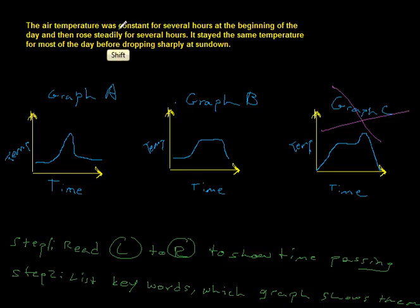The second keyword, I'm going to underline constant by the way. The second keyword here is that then the temperature rose steadily. I'm going to go ahead and underline it. It rose steadily for several hours. So again, graphs A and graphs B show the temperature rising steadily.